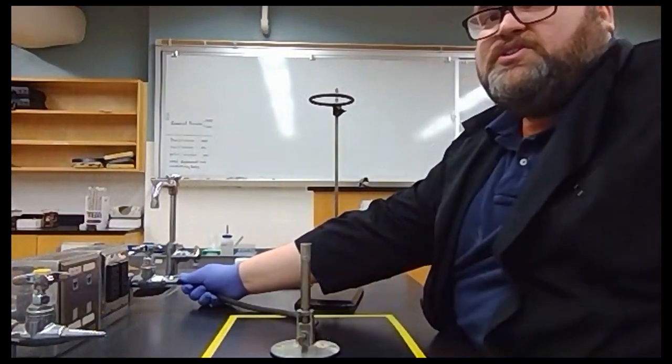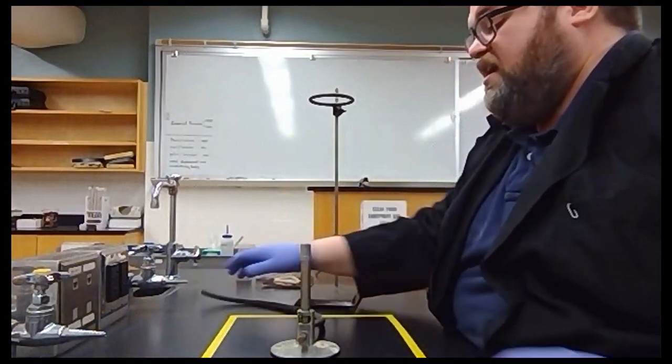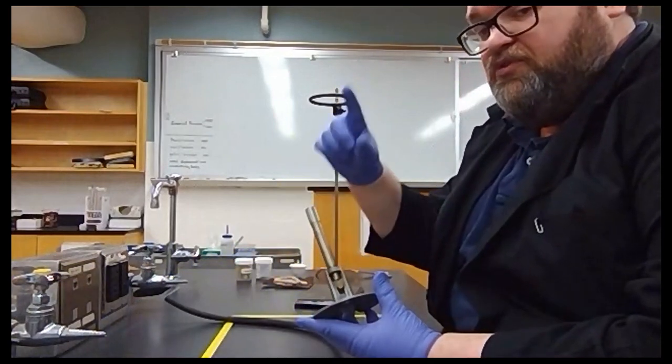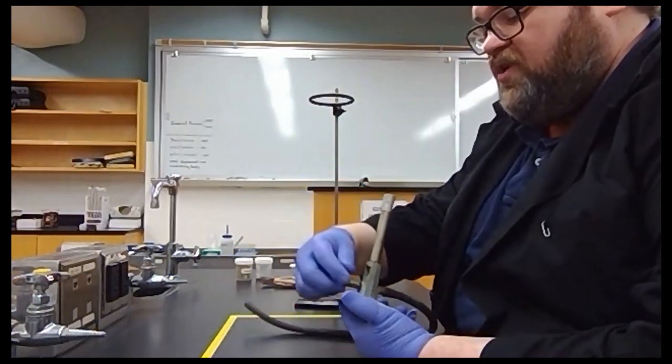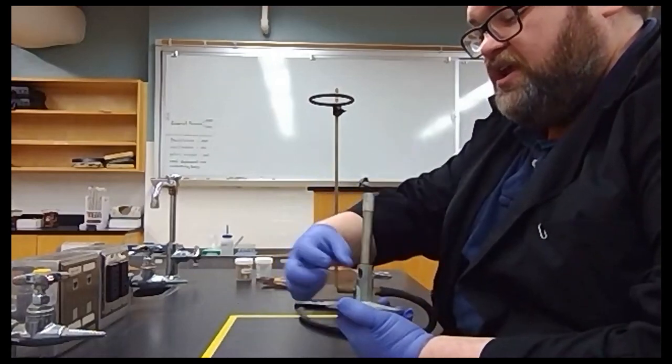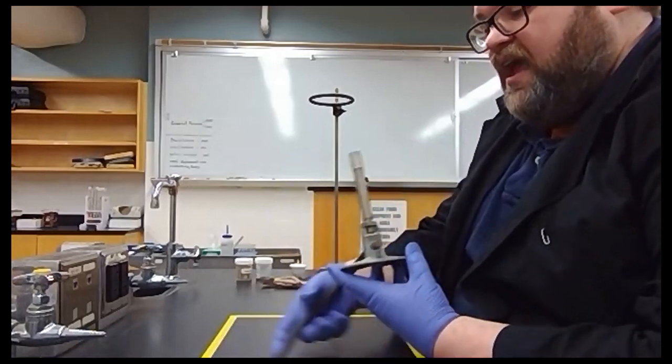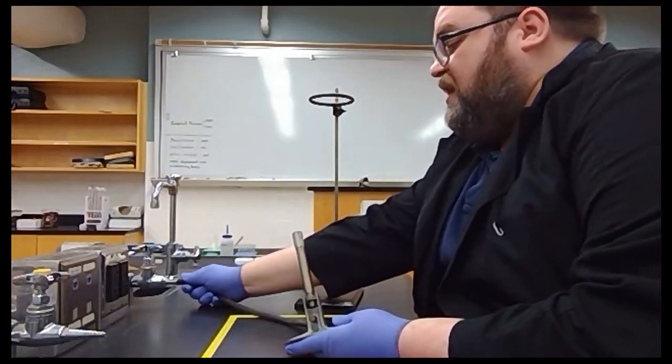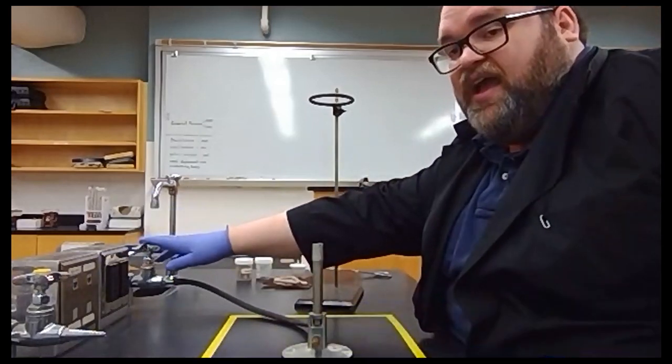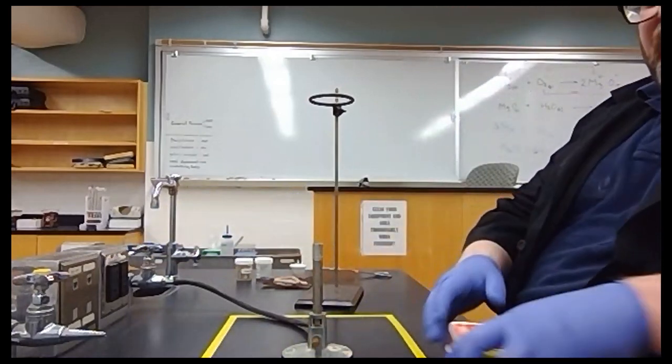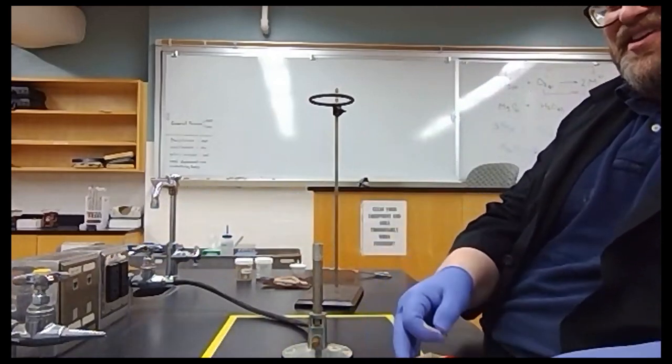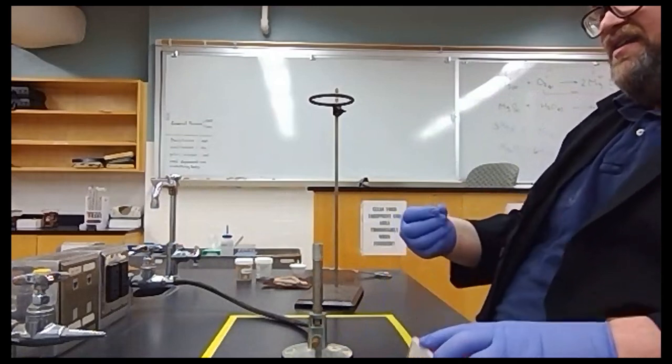Next we're going to take our Bunsen burner, and remember for safety we always completely close our Bunsen burner whenever we first get it. Then we turn it two big turns on both the bell and the gas inlet. Then we attach it to the gas main. At that point we're ready to start trying to light the fire.